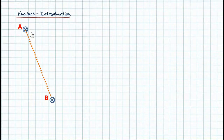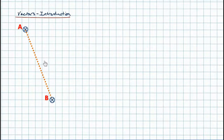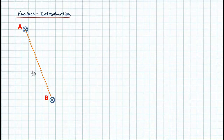A vector quantity is something that has both magnitude and direction. The size is very important, but so is the direction. To capture both in one quantity, we use two numbers enclosed in brackets. From those two numbers we can extract both the magnitude and the direction.